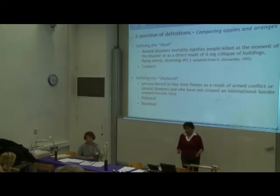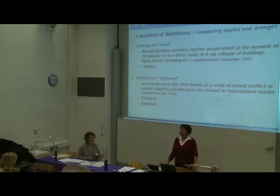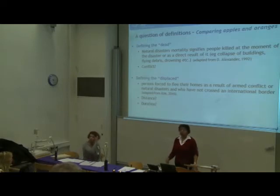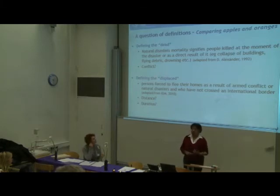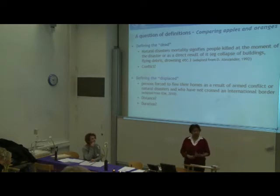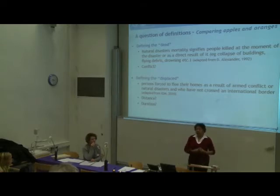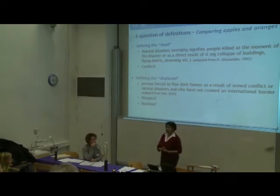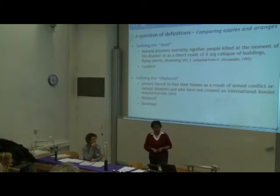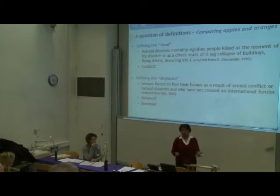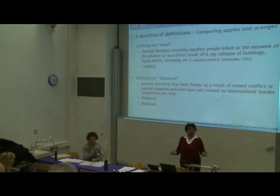Defining the displaced is also a big deal. Persons forced to flee their homes as a result of armed conflict or natural disasters, and who have not crossed an international border, are internally displaced; if they cross a border, they are refugees. Questions remain: how far did they have to have gone from their homes — 10 kilometers, 5, 25? What about a person whose home has been flooded and who moved 3 kilometers to a cousin's home? And regarding duration — do they have to be away 5 days, 10 days, 2 months, 8 years?